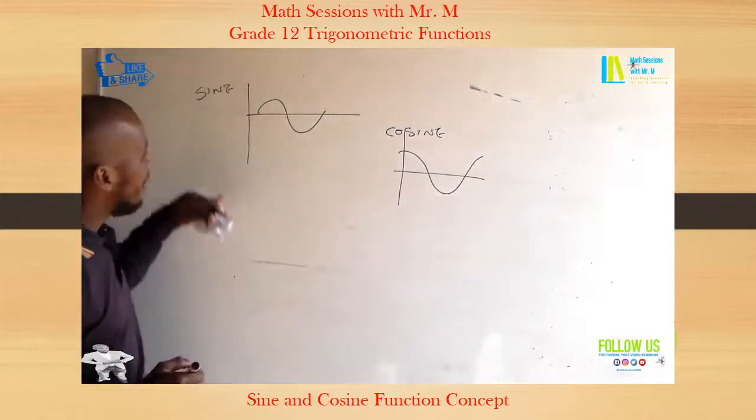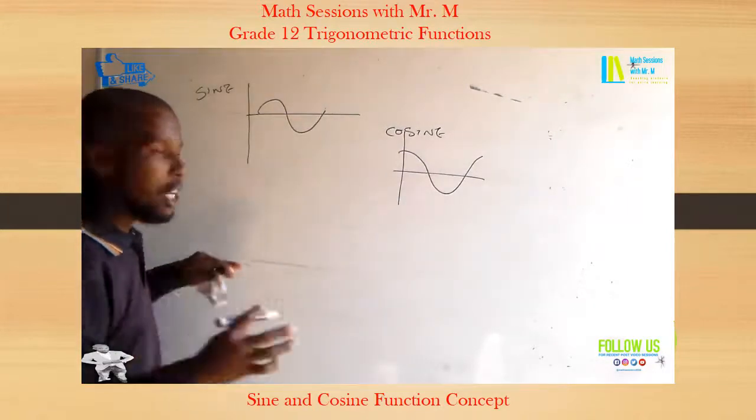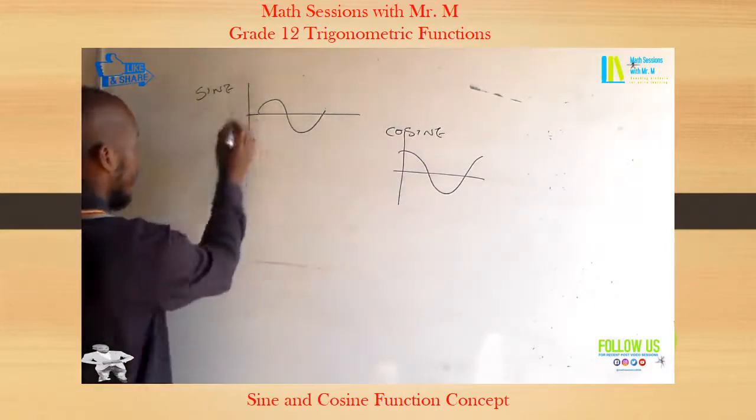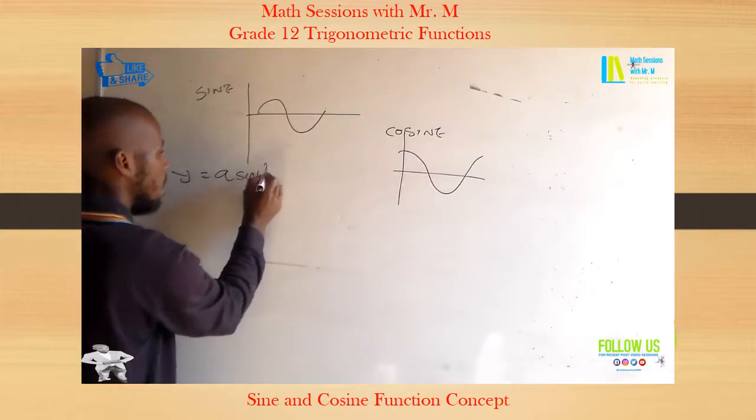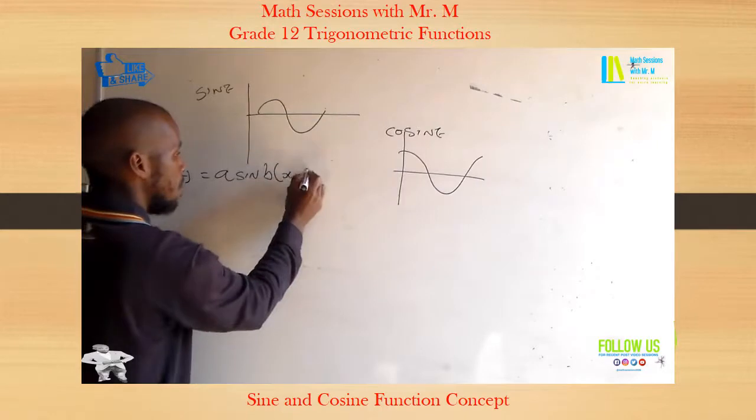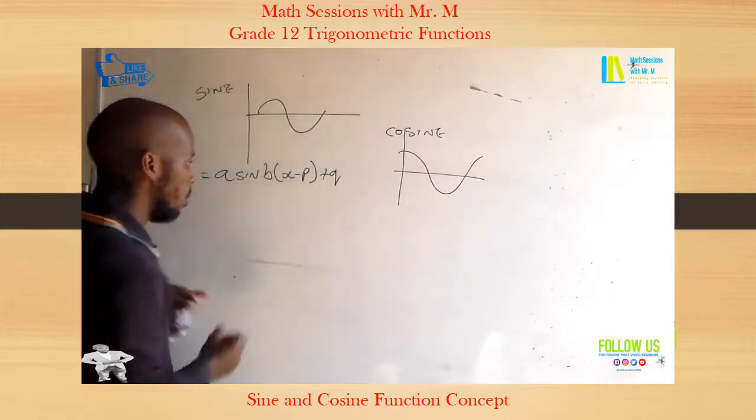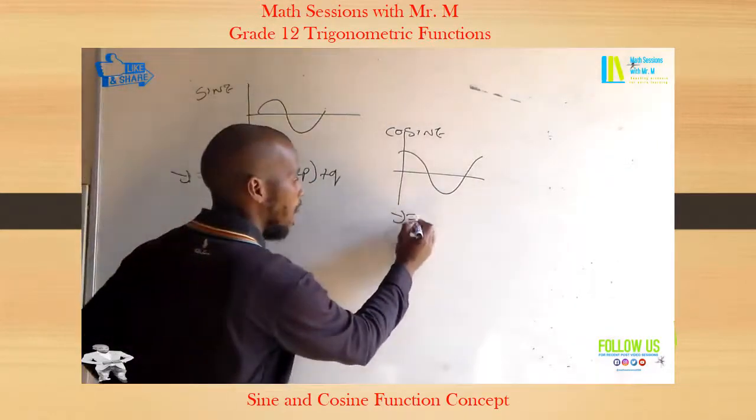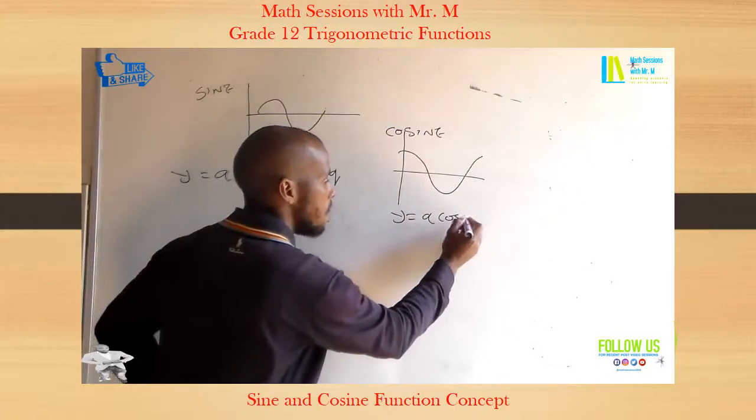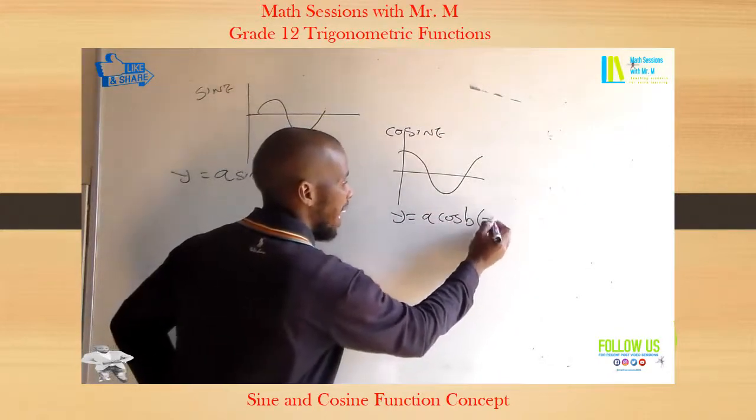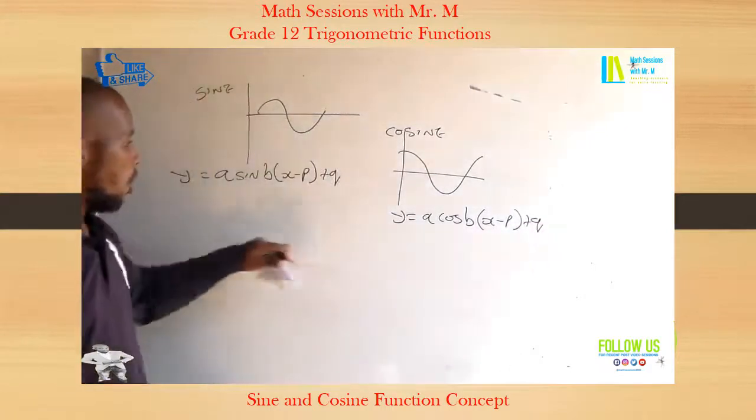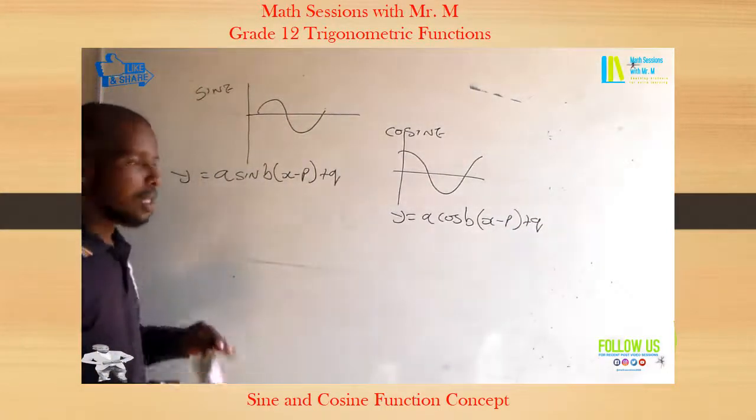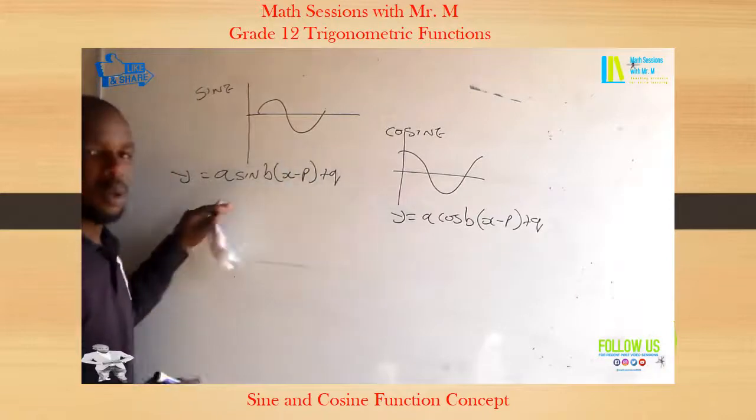Now if we were to explain or consider an equation between these two, let's say sine is equal to y = a sin(bx - p) + q. And that cos y = a cos(bx - p) + q. So we are explaining only the concept of these two because they are similar.